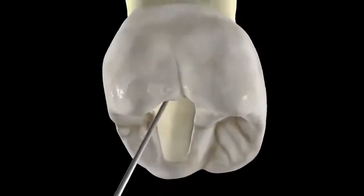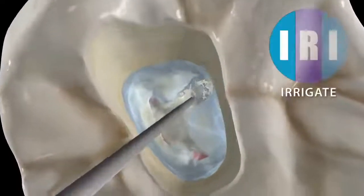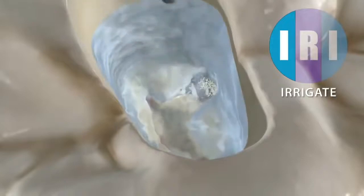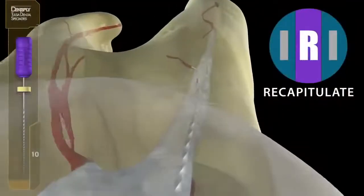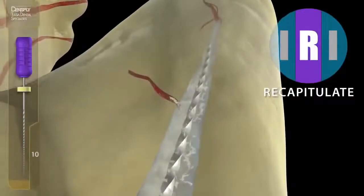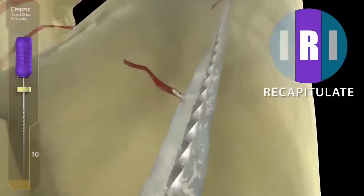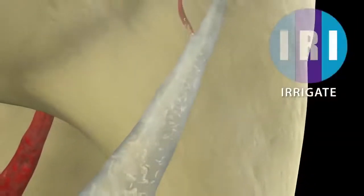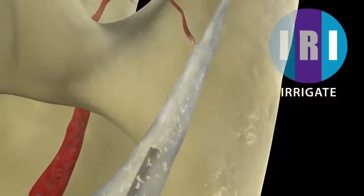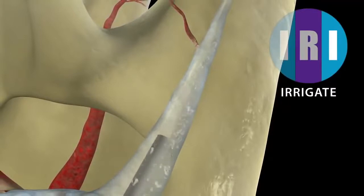We irrigate with full-strength sodium hypochlorite, which puts any dentin mud into suspension so we can easily recapitulate and remove it. Remember, dentin mud and collagen are the fatal flaws of endodontics. Sodium hypochlorite will digest detached collagen, so irrigation is an absolute must and you can't do enough of it.